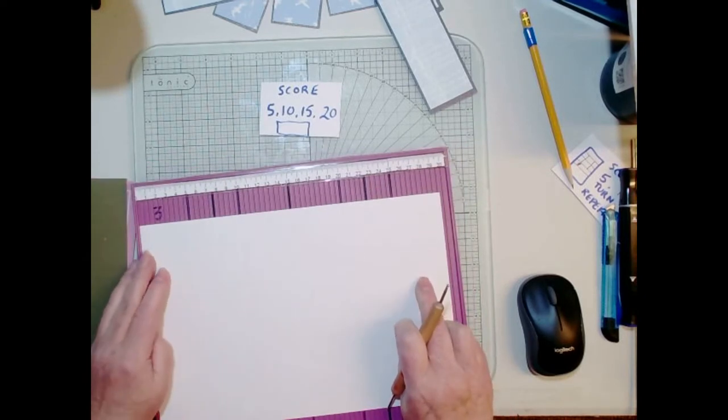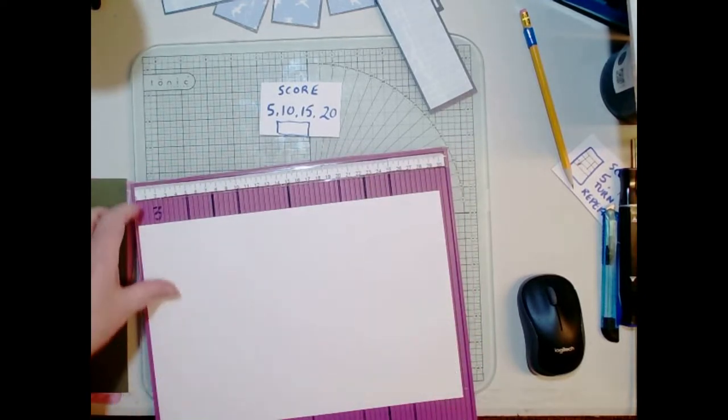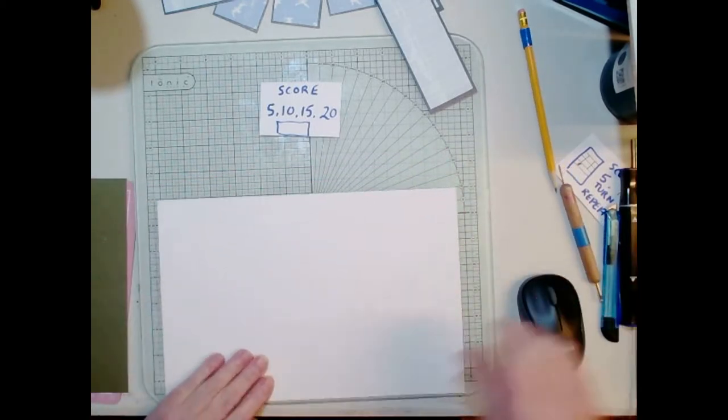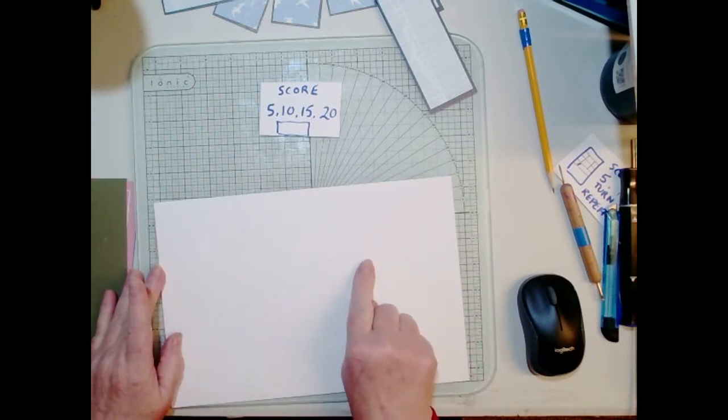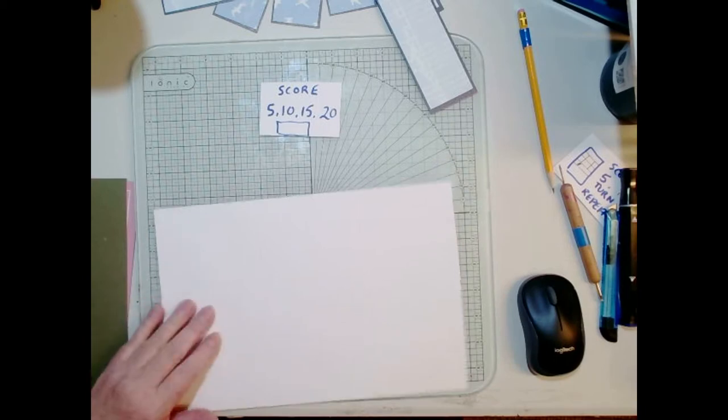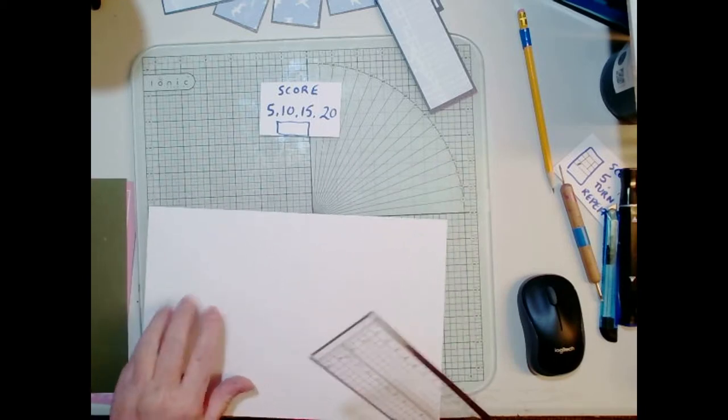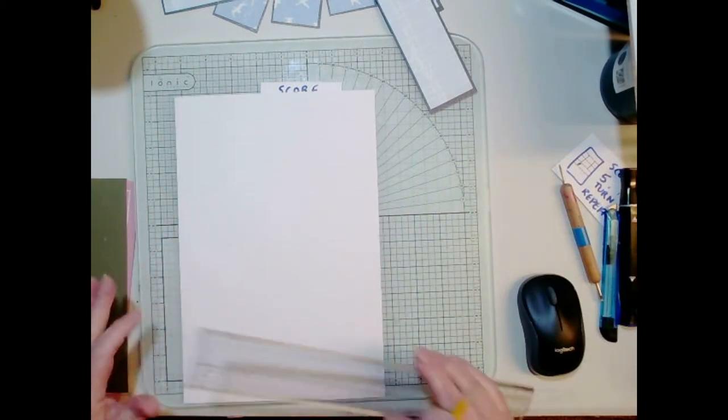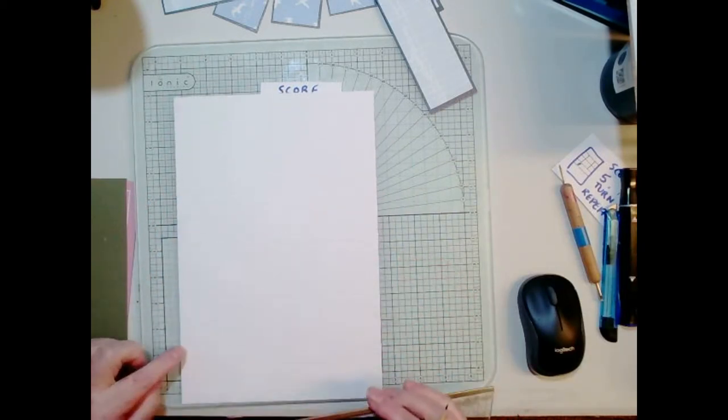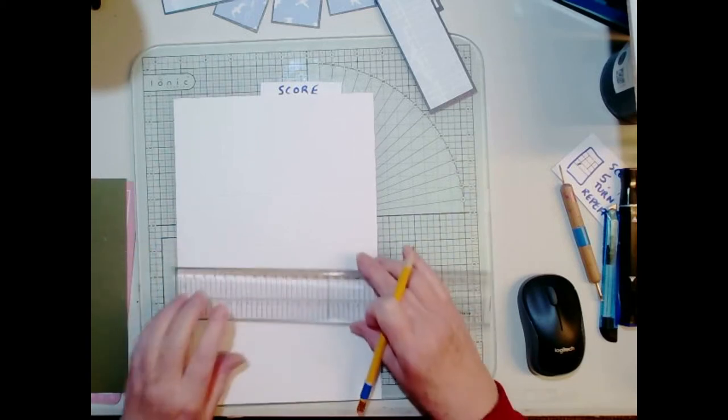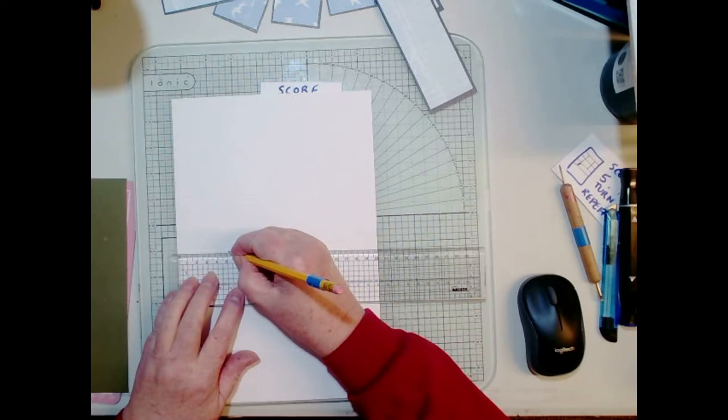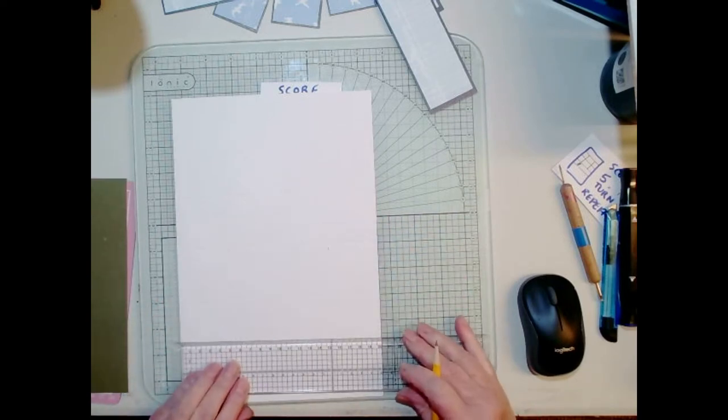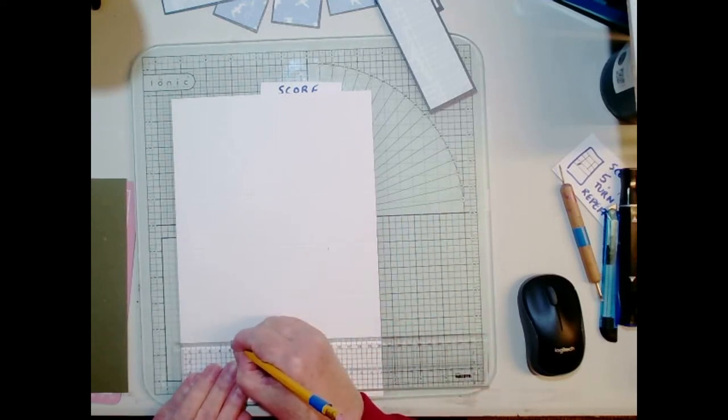I end up with a larger panel on this end which will be our writing panel. So we've got one, two, three, four and now I need to measure five centimeters. I'm working on the smaller panels here and between one and three I need to just mark five centimeters and then I mark 15 so it's five centimeters down, five centimeters up.